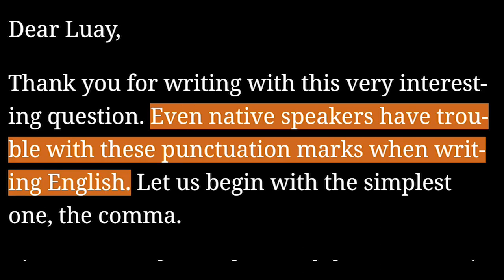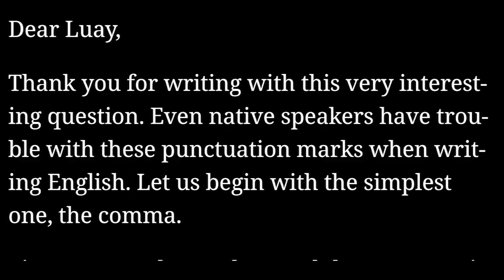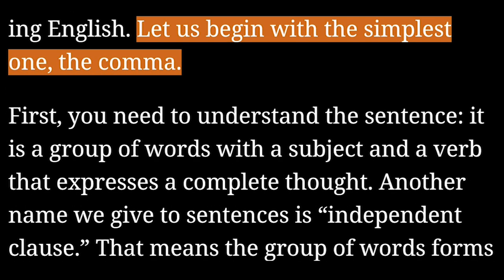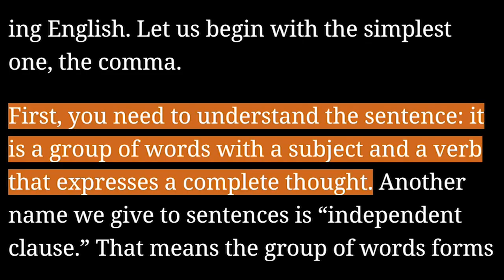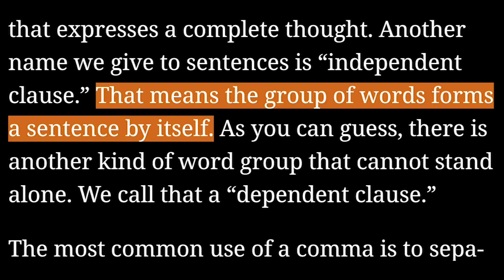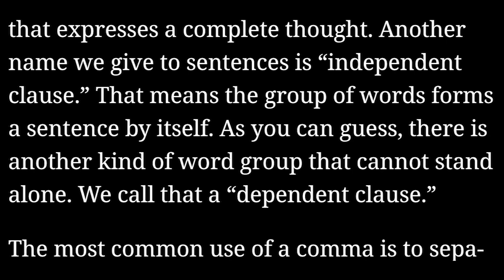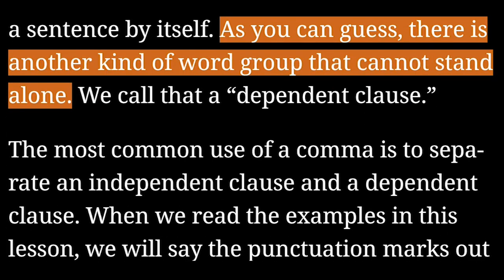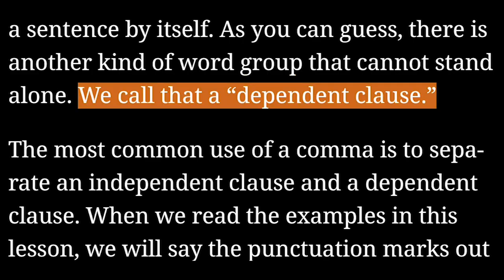Even native speakers have trouble with these punctuation marks when writing English. Let us begin with the simplest one, the comma. First, you need to understand the sentence — it is a group of words with a subject and a verb that expresses a complete thought. Another name we give to sentences is independent clause, meaning the group of words forms a sentence by itself. There is also another kind of word group that cannot stand alone; we call that a dependent clause.